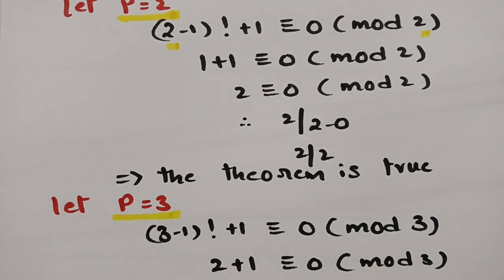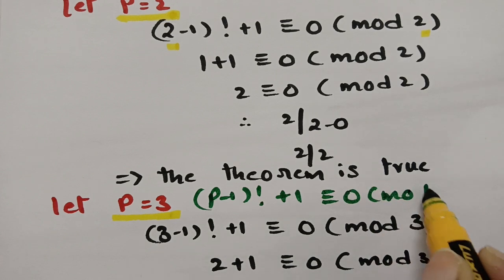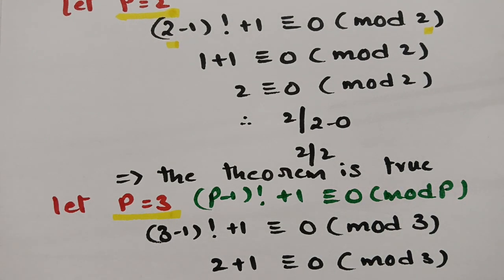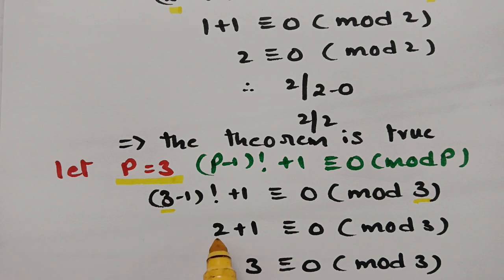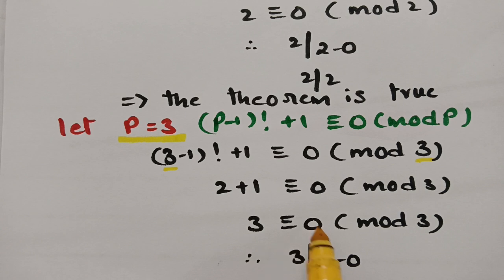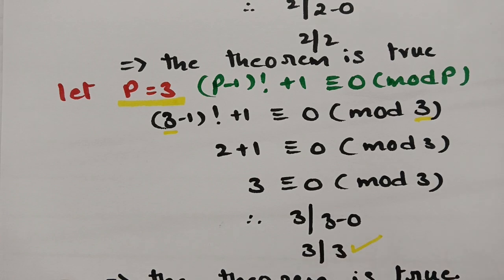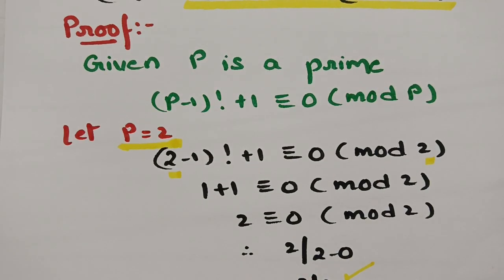Next, for p = 3, which is also a prime number, substituting into the formula gives (3−1)! + 1 ≡ 0 (mod 3). This becomes 2! + 1 = 1×2 + 1 = 3 ≡ 0 (mod 3). Then 3 must divide 3 − 0 = 3; clearly 3 divides 3, so the theorem is true for p = 3 as well.